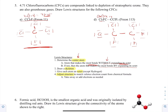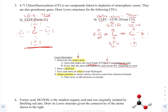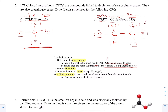Counting valence electrons: four from each carbon plus seven times three halogens on each carbon — that's 8 plus 42, giving 50 valence electrons total. Counting electrons in the structure confirms 50. This is the correct Lewis structure. That's how you handle molecules with two center atoms — just bind them together, especially when they're carbons.